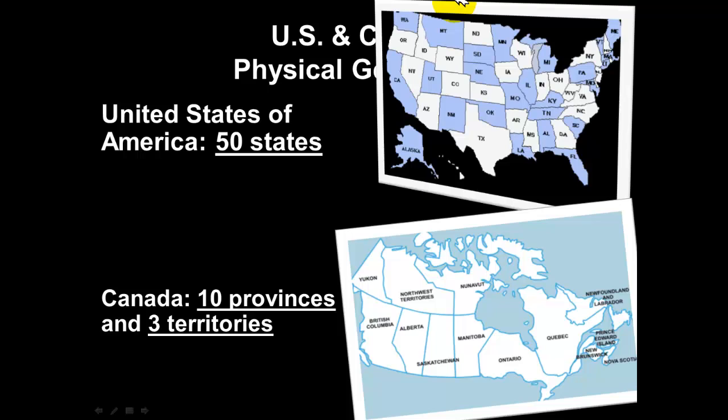Canada, our neighbors to the north, is made up of 10 provinces and three territories. The United States also has territories — Puerto Rico, the Philippines, and American Samoa. Territories are just places that are not official states. The citizens of the territories have citizenship status, but the territories themselves do not have full voting rights.